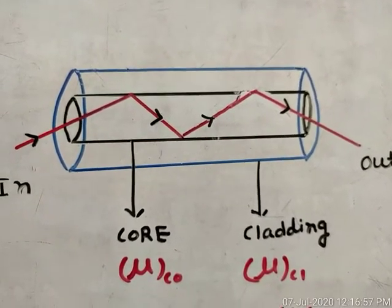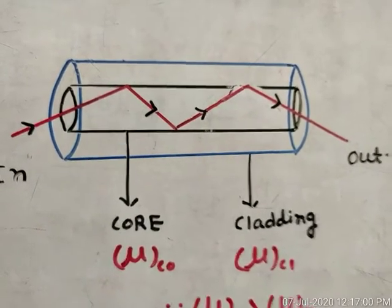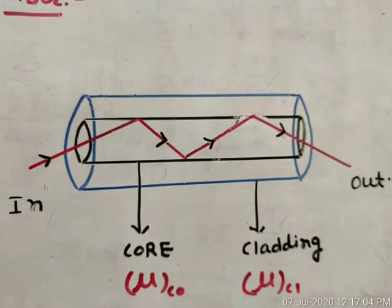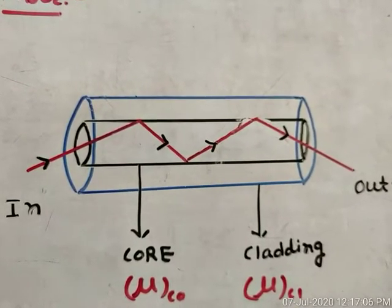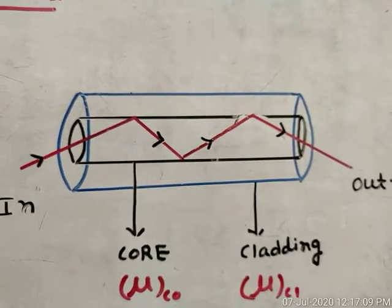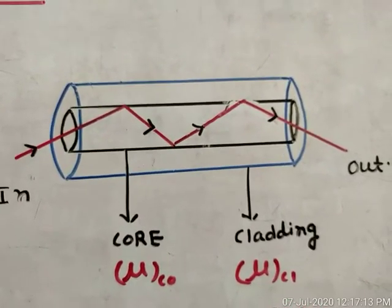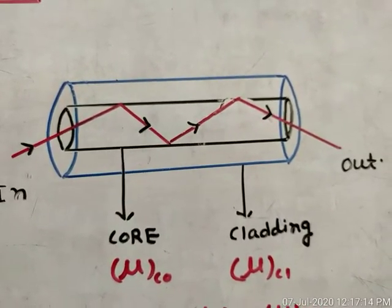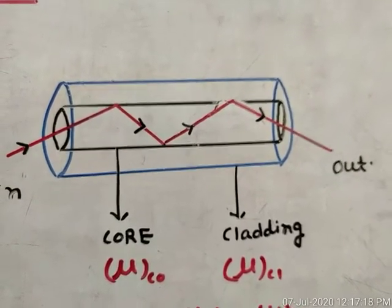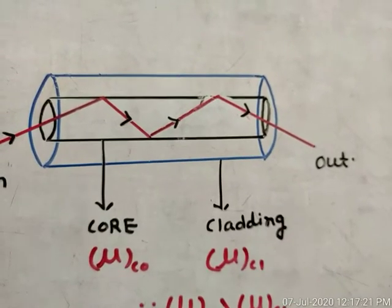So these are three examples based on total internal reflection: mirage in desert, brilliance of diamond, and optical fiber. In any exam or competition, if asked about the working or cause of these phenomena, you just need to write one line: all these phenomena are based on total internal reflection of light, and that will get you full marks.